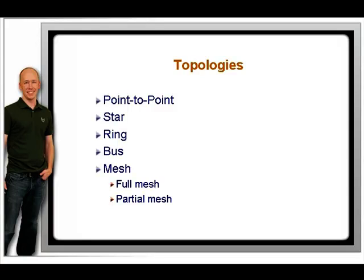A ring topology is created when one device is connected to the next one sequentially, with the last device being connected to the first. The actual devices don't necessarily form a circle, but the data moves in a logical circle. FDDI and token ring are examples of ring topologies.